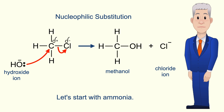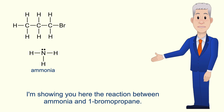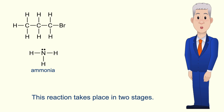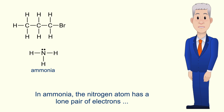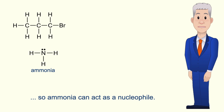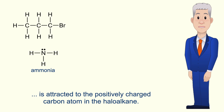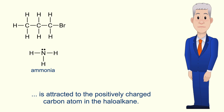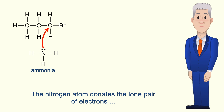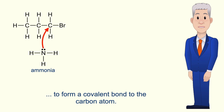Let's start with ammonia. I'm showing you here the reaction between ammonia and 1-bromopropane. This reaction takes place in two stages. In ammonia the nitrogen atom has a lone pair of electrons, so ammonia can act as a nucleophile. The lone pair of electrons on the nitrogen atom is attracted to the positively charged carbon atom in the haloalkane. The nitrogen atom donates the lone pair of electrons to form a covalent bond to the carbon atom.